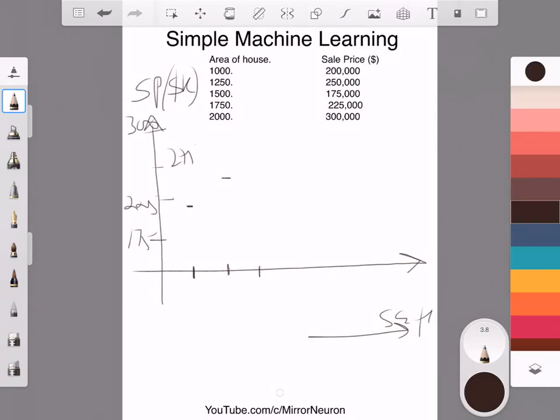And if I look at 1750 square feet house which is here. And my 2000 square feet house is over here, a big number, $300,000. So these are my five values.